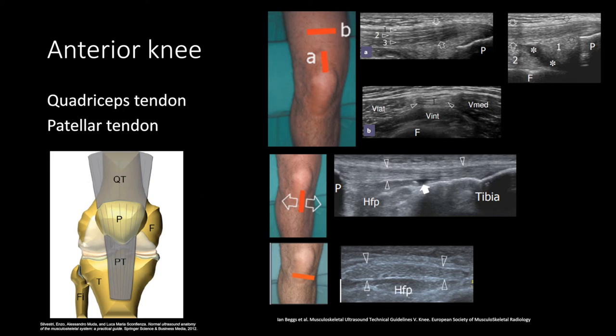The main structures to look at are the quadriceps tendon and the patellar tendon. Position the knee so that it is slightly flexed to stretch the extensor mechanism. The quadriceps tendon is four muscles forming three layers: the rectus femoris, the vastus lateralis, the vastus medialis, and the vastus intermedius, forming the superficial, intermediate, and deep layers. The superficial layer labeled number one comes from the rectus femoris, the intermediate layer labeled number two from both the vastus lateralis and vastus medialis, and the deep layer labeled number three from the vastus intermedius. The top rightmost image shows a long axis view of the distal third of the quadriceps tendon. The asterisk denotes the suprapatellar synovial recess, number one the suprapatellar fat pad, number two the prefemoral fat pad, and the empty arrows indicate the quadriceps tendon.